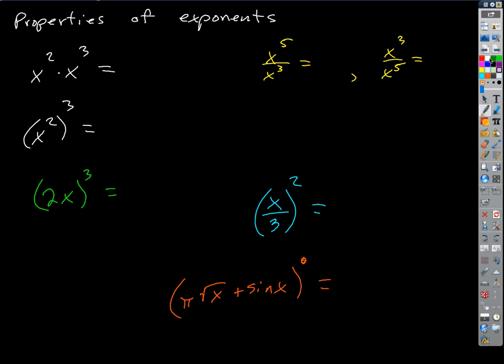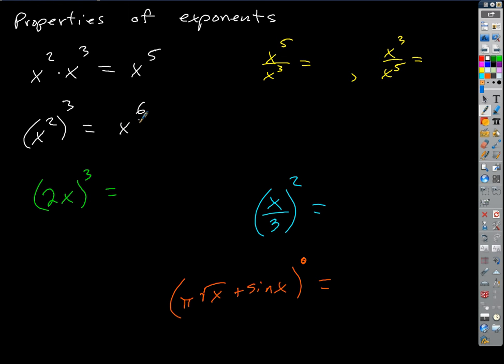X squared times X cubed is X to the fifth, because when you multiply like bases, you add the exponents. X squared cubed is X to the sixth, because if you take a power to a power, you multiply the exponents.